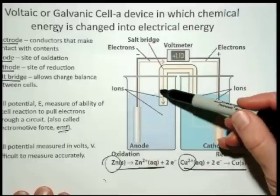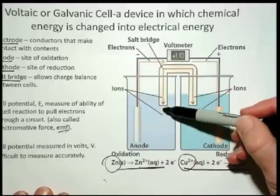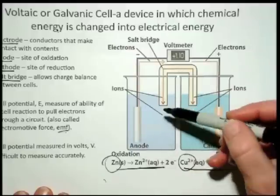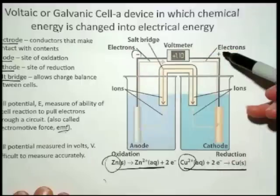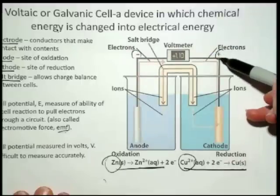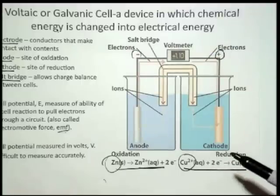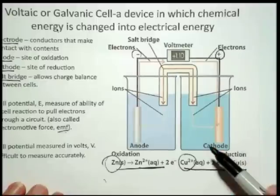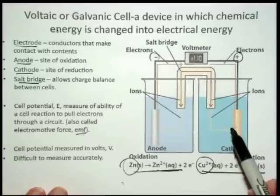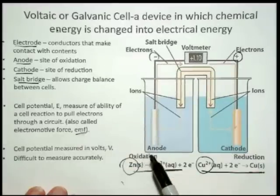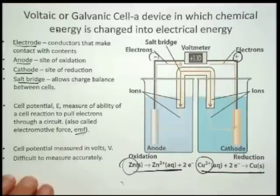So the ions are flowing through the salt bridge one way or the other. And in this case, the anode, I need to tell you also, is always with a negative charge, and the cathode is always indicated with a positive. All right, so this is just a really quick review. I just wanted to have it all on one page so you would know that I expect you to know the anode is the site of the oxidation and whatnot.